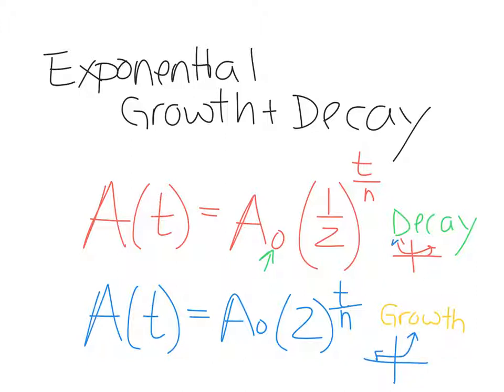Okay, so let's define what all these variables mean. So A of t is just the amount at a certain time. So A stands for the amount of like a radioactive substance.